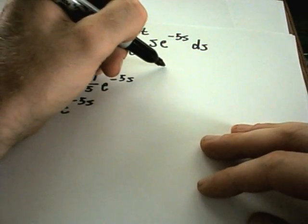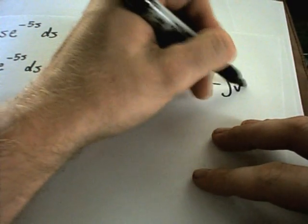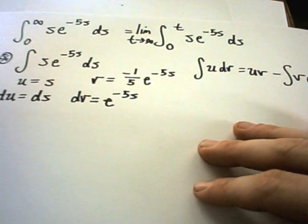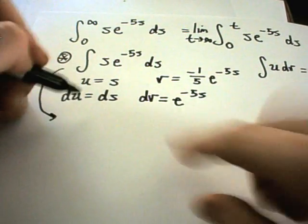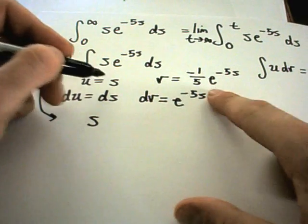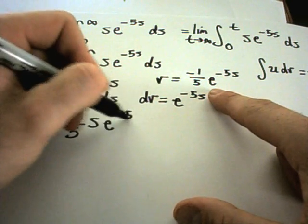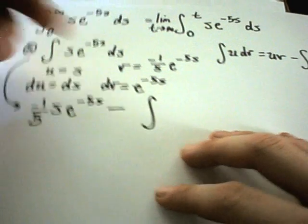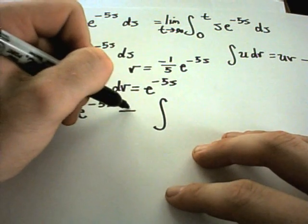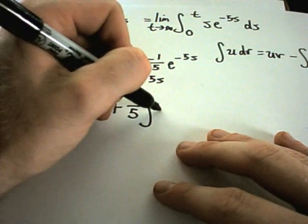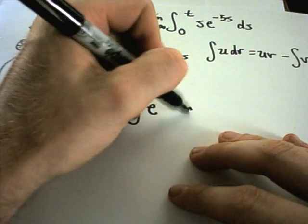Recall our integration by parts formula: ∫u·dv = u·v − ∫v·du. Plugging everything in: I get u times v, so I'll pull the −(1/5) out front times e^(−5s). Then I subtract the integral of v·du — I pull the −(1/5) out front, making it a positive (1/5), times e^(−5s) ds.